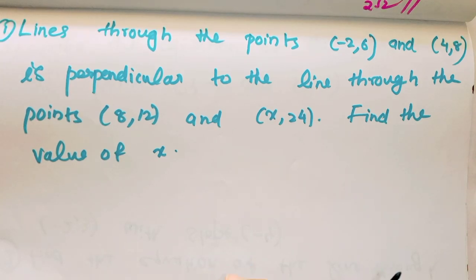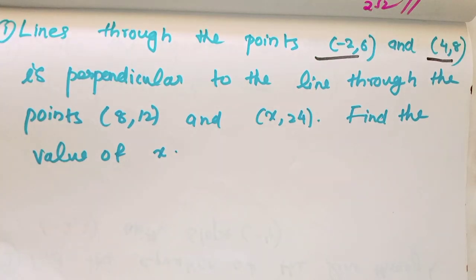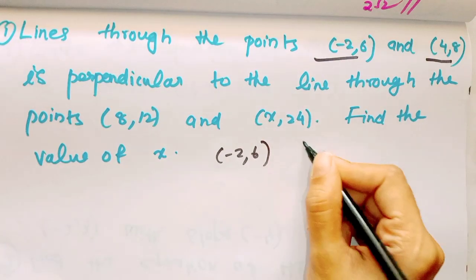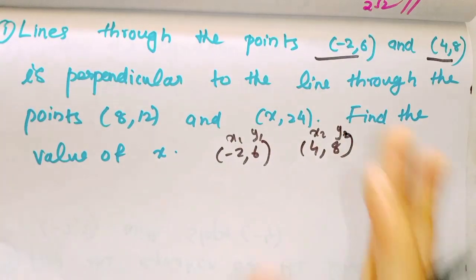Now we have one simple question. Lines through the points is perpendicular to the line through the points A(1,2) and X(2,4). Find the value of X. Points are minus 2 and 6, and 4 and 8. We have X1 and Y1, this is X2 and Y2. We have to mark it.